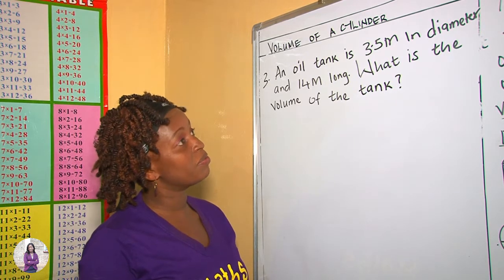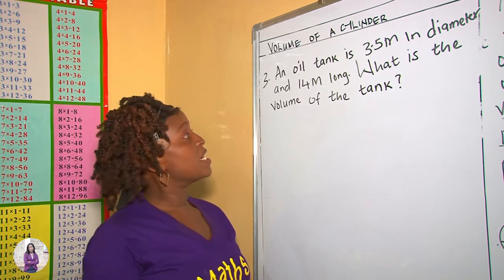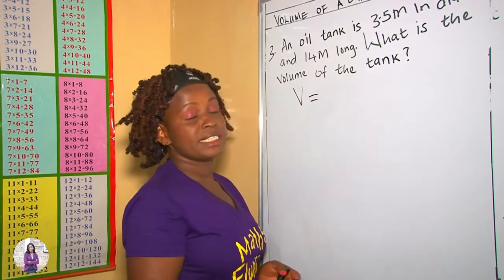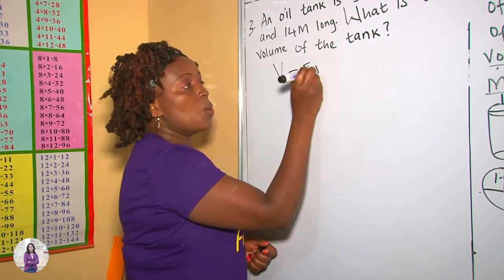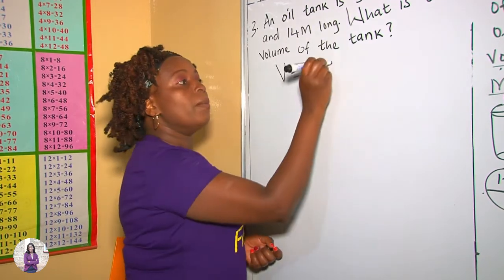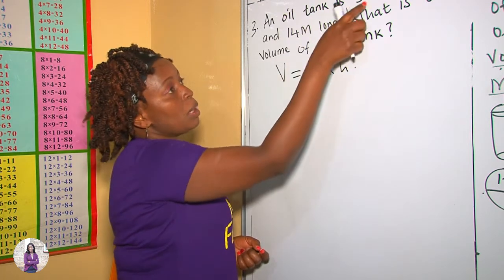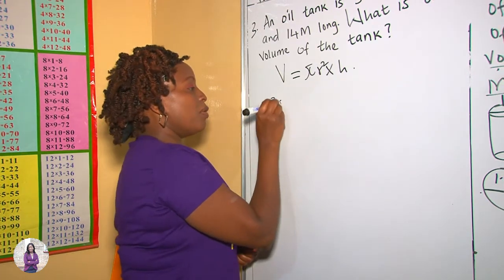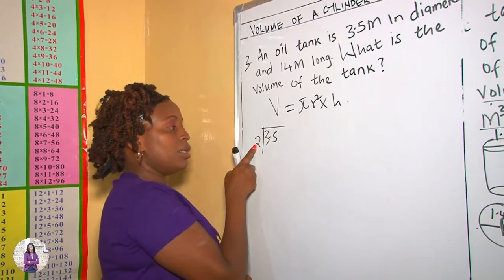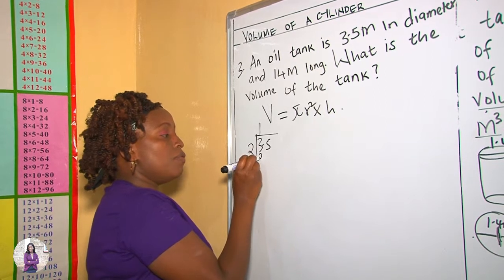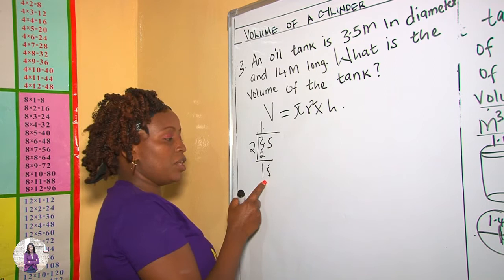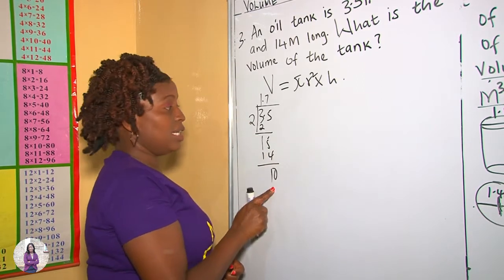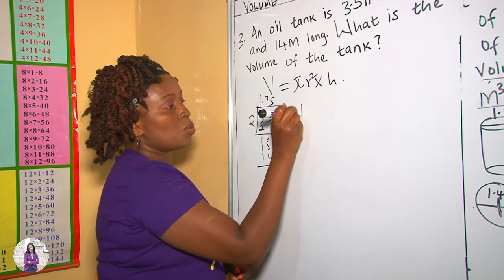In our next example, we are told that an oil tank is 3.5 meters in diameter and 14 meters long. What is the volume of the tank? Therefore, we apply the formula: volume of a cylinder is cross-sectional area, which is the area of a circle, pi r squared, multiplied by the height. In this question, 3.5 meters is the diameter, so we need to change it into radius: 3.5 divided by 2 gives 1.75. Therefore, our radius is 1.75.